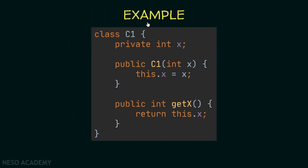I created a class called C1. Inside it we have a private integer x, a constructor that takes the value of x and assigns it to the attribute, and also a getter for x. Let's see if this class is immutable. All data fields are private, we don't have any setters, and since we don't have an attribute which is an object, the third rule is satisfied. So the class C1 is immutable — we will not be able to change the value of x once the object is created.